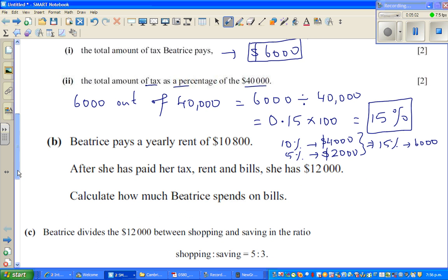Moving on to question B. Beatrice pays a yearly rent of $10,800. After she has paid her tax, rent, and bills, she has $12,000 left. Calculate how much Beatrice spends on bills.